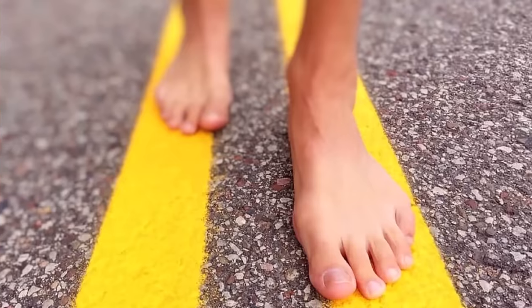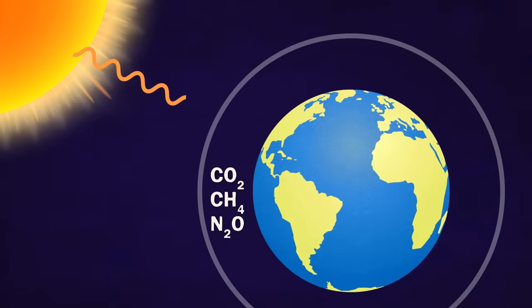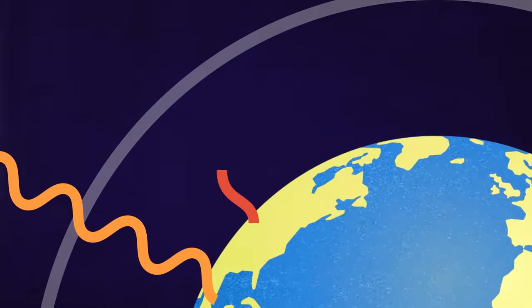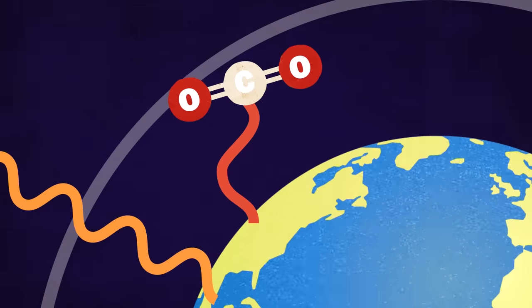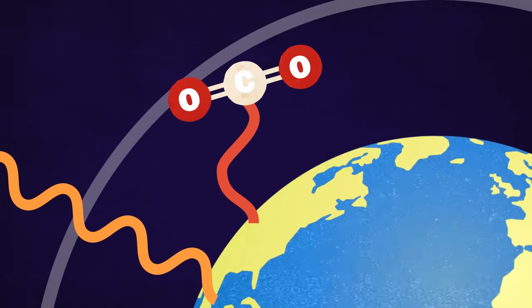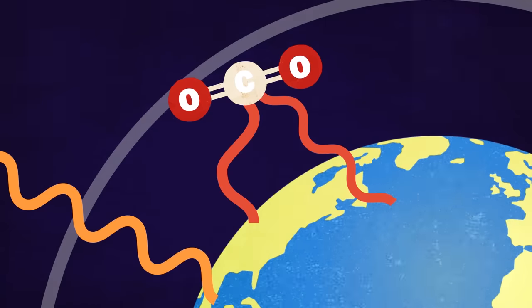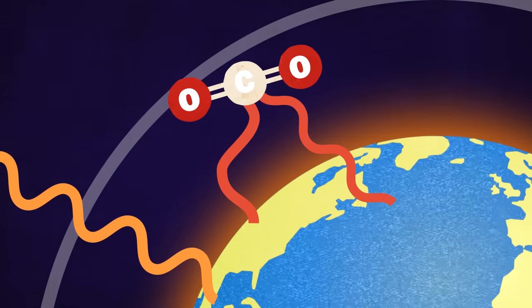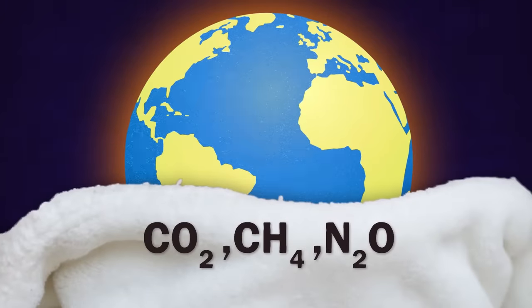Which is why walking across pavement without shoes in the summer can be a painful experience. Compared to the energy from the sun, that re-emitted heat has a longer wavelength — in the infrared of the light spectrum. And when that infrared re-emitted energy hits a greenhouse gas molecule, that molecule is able to absorb that energy and re-radiate it, warming the atmosphere. Like a real greenhouse's windows, greenhouse gases act like a big blanket or jacket wrapping the Earth, keeping heat trapped inside.